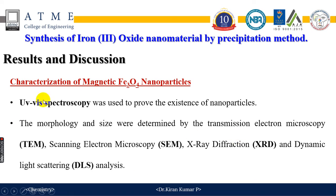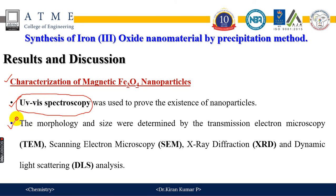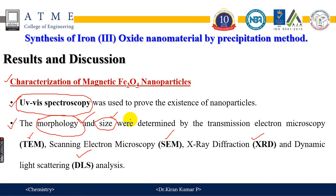In order to verify whether the prepared particles are nanoparticles, we go for characterization techniques. Initially, for the existence of nanoparticles, it is proved with the help of UV-visible spectroscopy. Further, to know more about the morphology, surface, and size of nanoparticles, we carry out TEM imaging, SEM — scanning electron microscopy, XRD — X-ray diffraction studies, and dynamic light scattering studies to analyze the morphology and size of the synthesized nanoparticles.